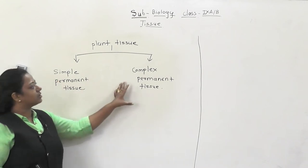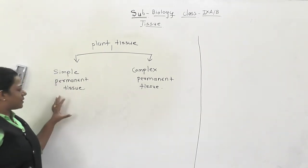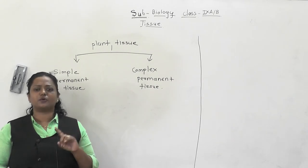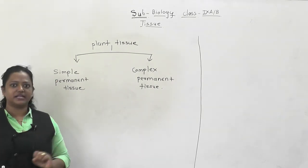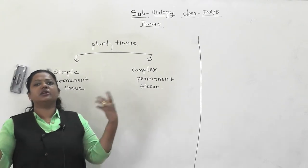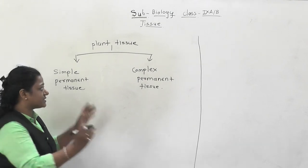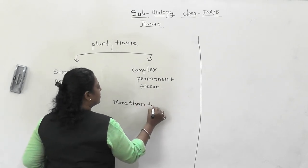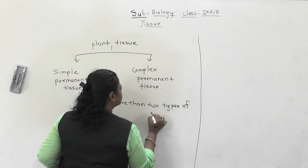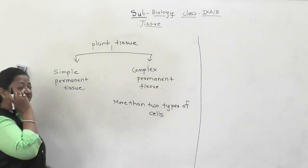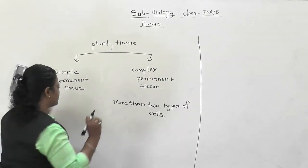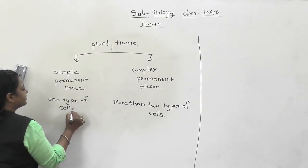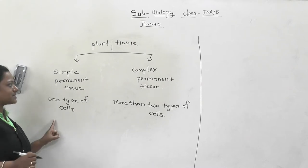Simple permanent tissues are mainly made up of only one type of cell, while complex permanent tissues are made up of more than two types of cells - means different kinds of cells are present. This is the main difference between simple permanent tissue and complex permanent tissue.